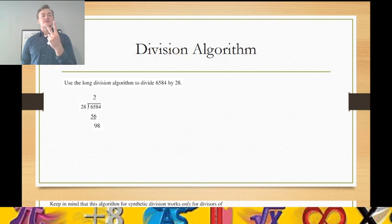28, 56, 84. If I go any higher to 112, I'm over 98, so I will stop at the 3. 28 goes into the 98 three times. 28 times 3 is 84. 98 minus 84 is 14.